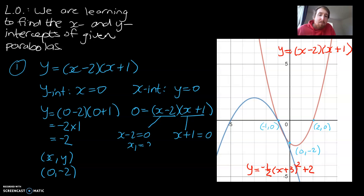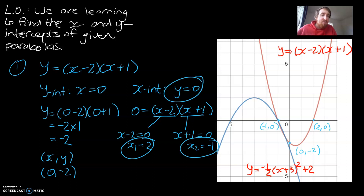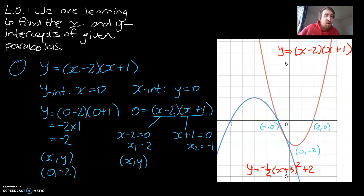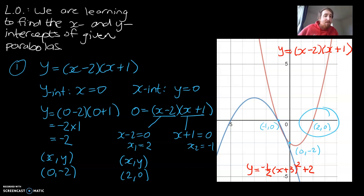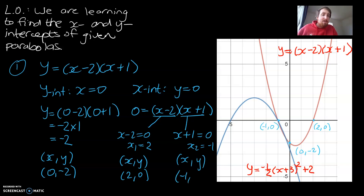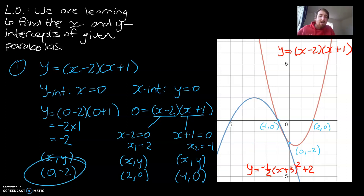So x1 is going to be equal to positive 2, and x2 is going to be equal to negative 1. Just like the first equation, we've got values of x and a value of y, and together they give us the coordinates. So the first intercept is 2, 0 — which is the one on the right that we observed. And the second intercept is negative 1, 0 — matching our second x-intercept on the graph. So for the first equation, we've got all three coordinates: our one y-intercept and our two x-intercepts.